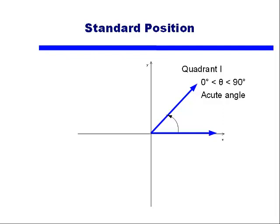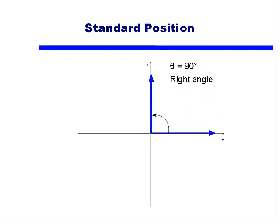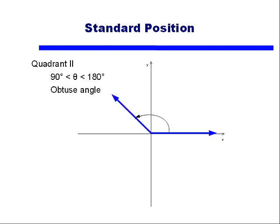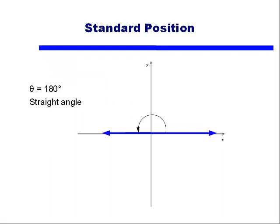In quadrant I, angles are between 0 and 90 degrees — what we've known as an acute angle. If we keep rotating, we come up with an angle of 90 degrees, or a right angle, which lines up with the positive y-axis. Continuing to rotate puts us in quadrant II, where the angle is between 90 and 180 degrees — what we've known as an obtuse angle. Continuing further gives us 180 degrees, or a straight angle, which lines up with the negative x-axis.